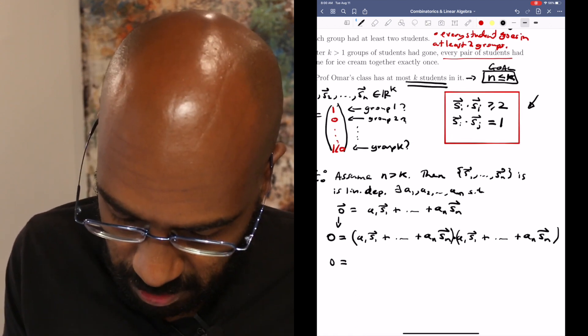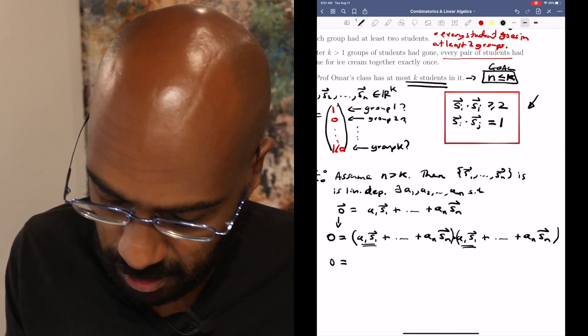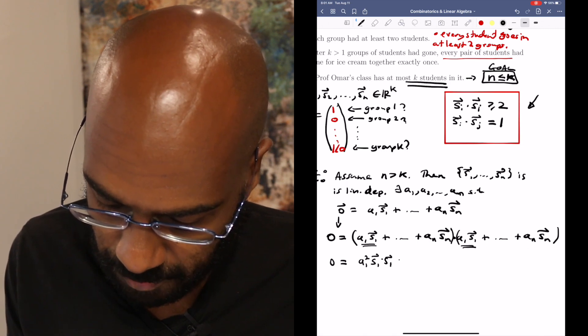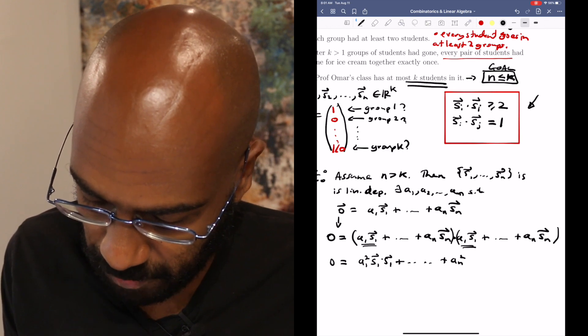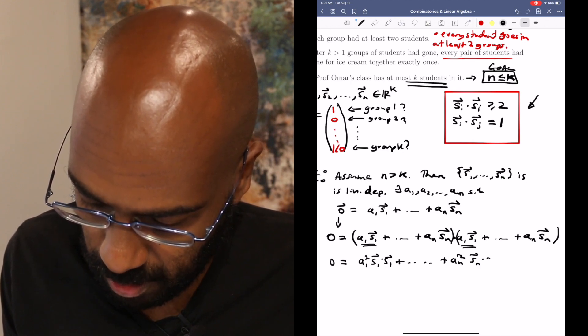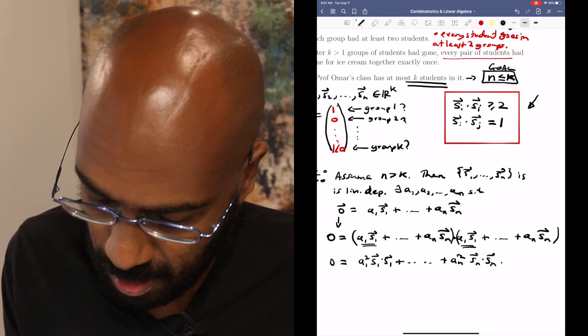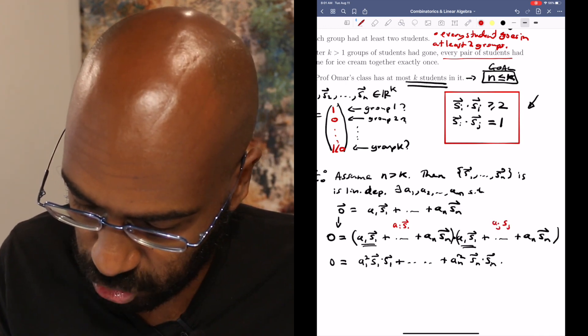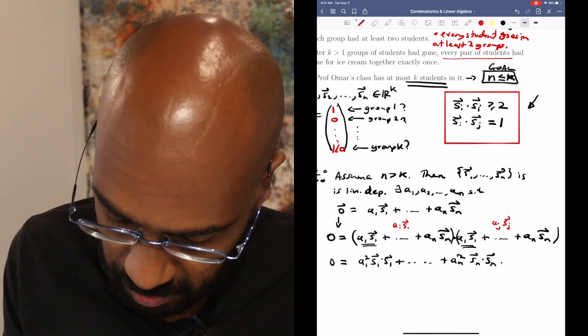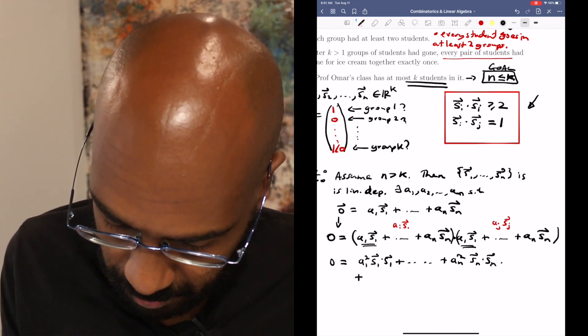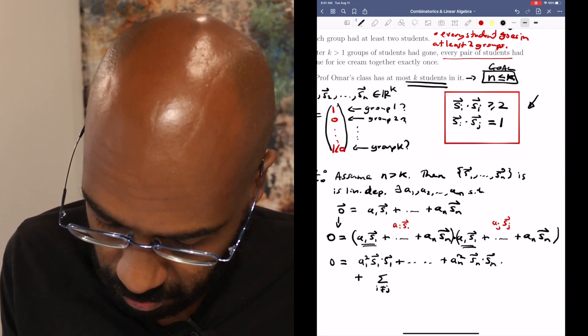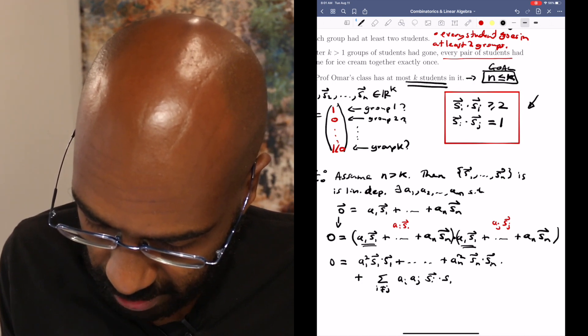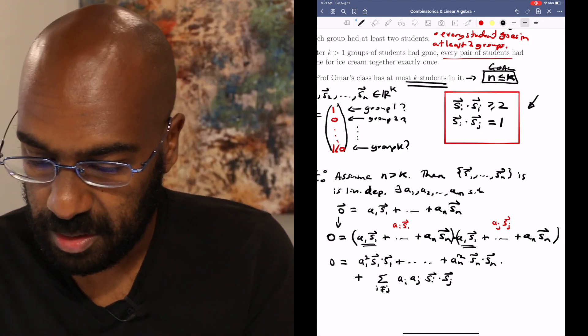Now there's a few terms that appear here. One is when we take things that look alike. For example, these two will have a1 squared s1 dot s1 and we'll have a bunch of these up to an squared sn dot sn and then we'll have all the pairwise products, so things like a i s i and a j s j. So that'll look like the sum i not equal to j of a i a j s i dot s j.